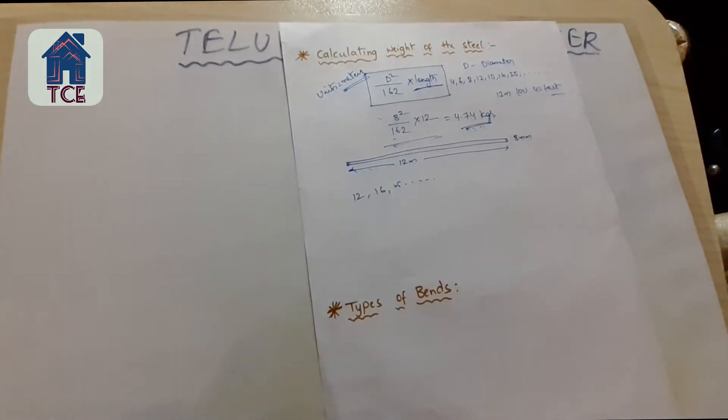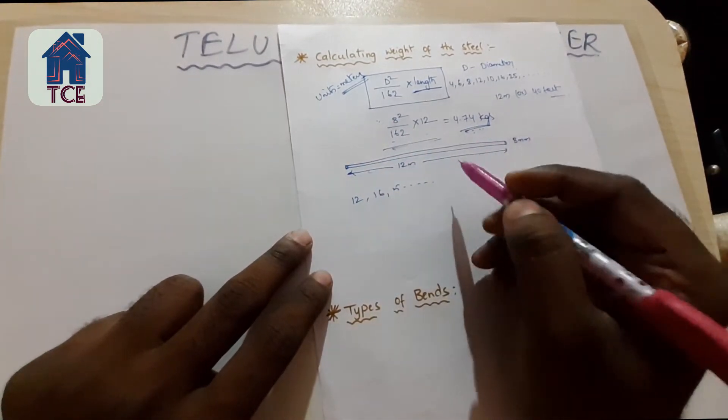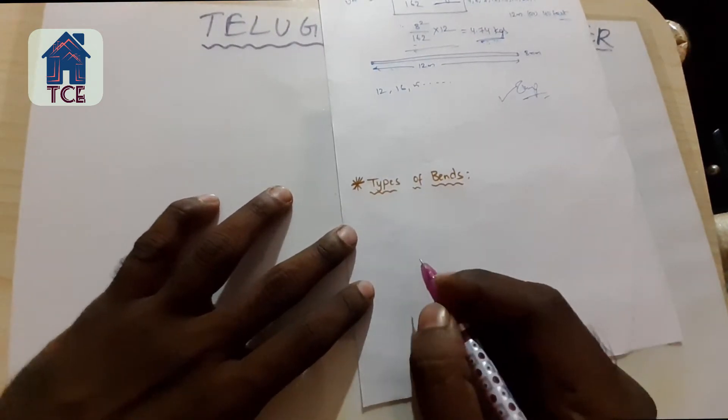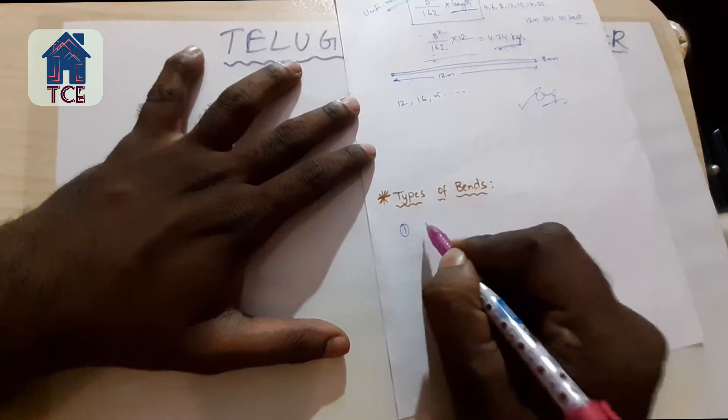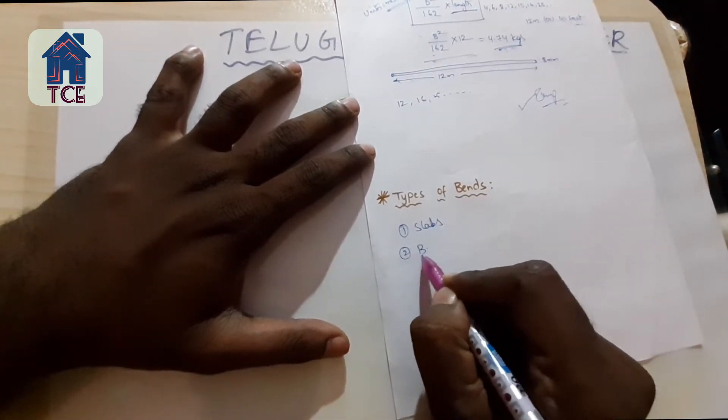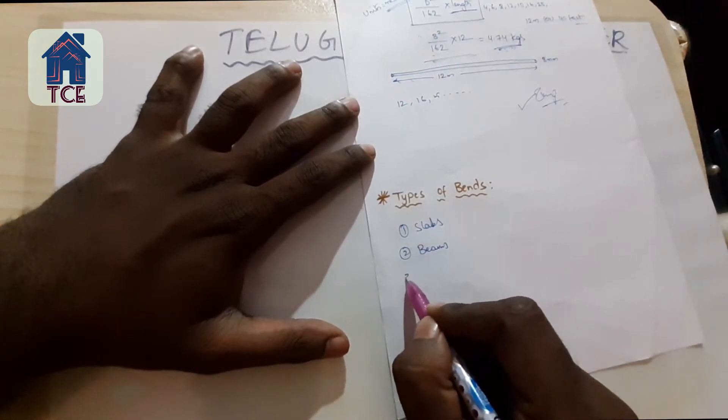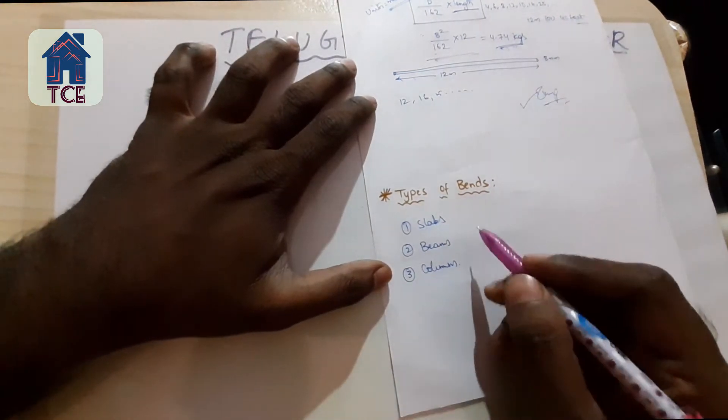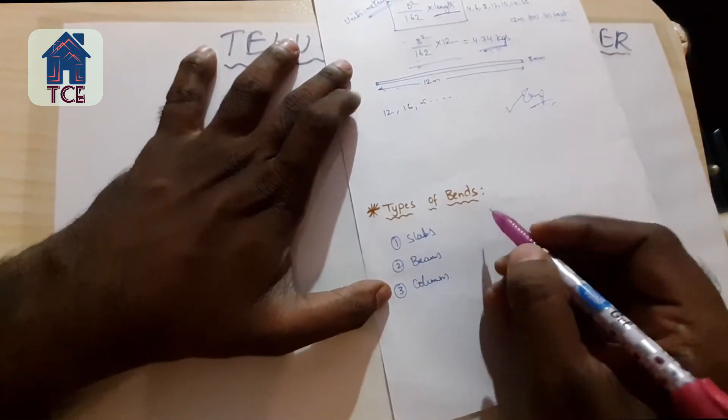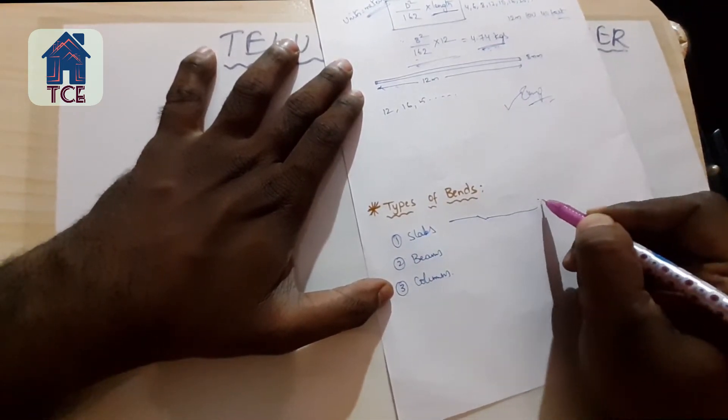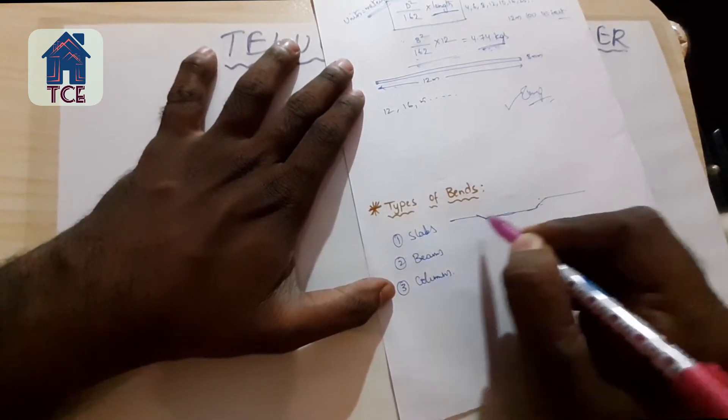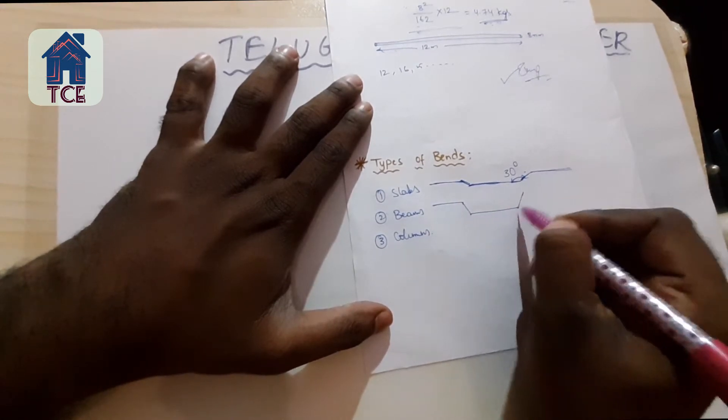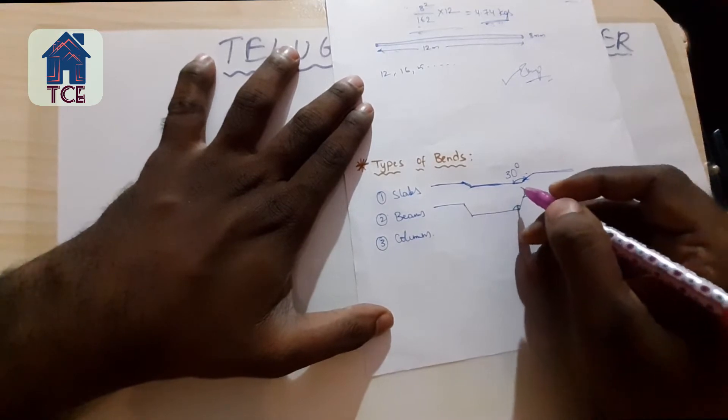Now this is about reinforcement bars. It is very important to use these tools. There are different types of bends - slabs, beams, columns. It is 45 degrees.